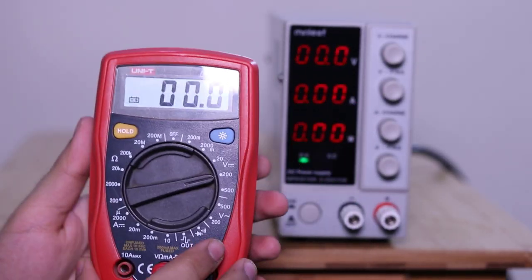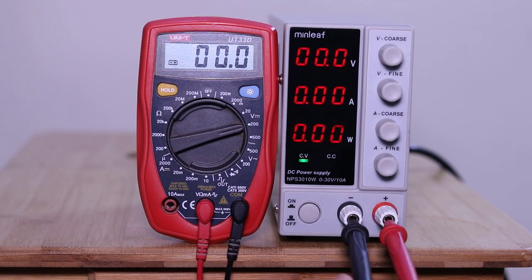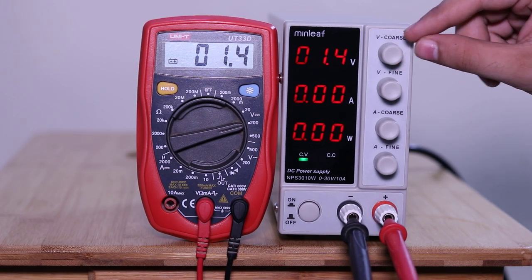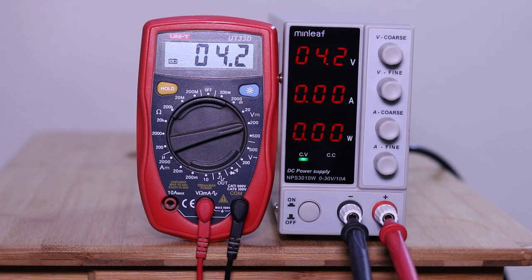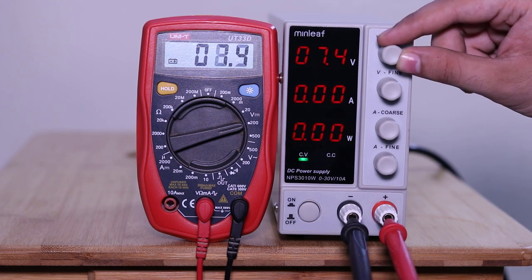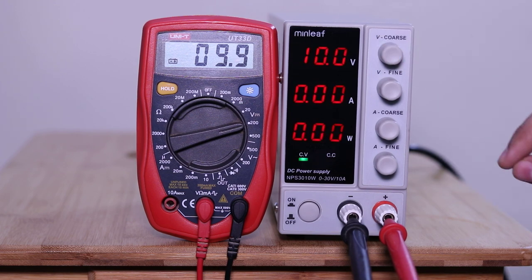Now let's quickly test the output voltage with multimeter and match with the display of power supply. The supply display is precisely calibrated. If you still found any variation, so don't worry, you can calibrate the display using the preset variables inside the supply.